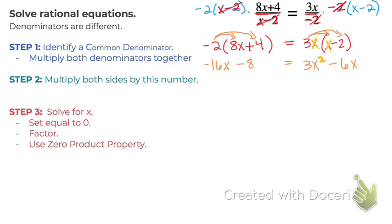Then we can factor and solve using the zero product property. So let's move everything over to the right side. Now you could do this in two steps or in one step. I'm moving that negative 16x by adding 16x.